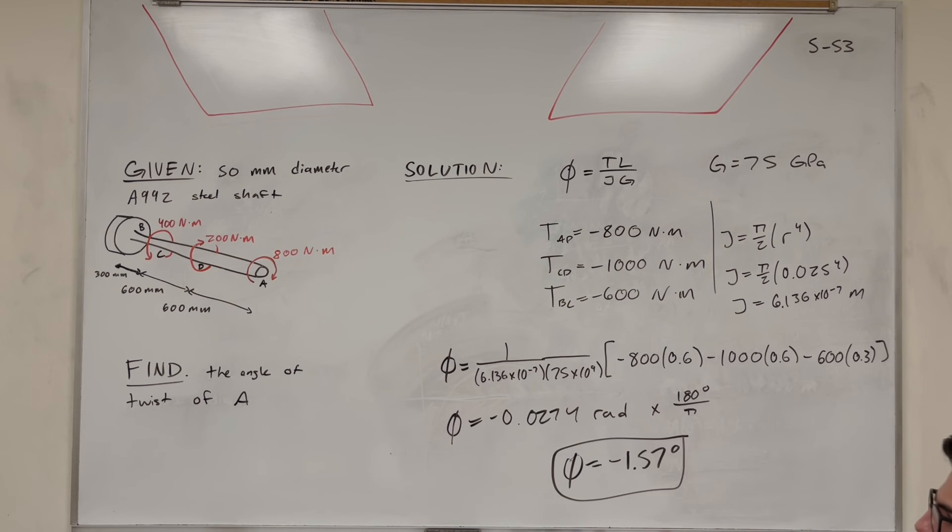And there we go. So that's our angle of curvature, our angle of twist of A. So that's how you solve this problem. Not too tricky. But make sure you do the torque calculations correctly. So if you have any trouble, check out my playlist. I've got a whole series on this. I'll see you in the next video. Thanks for your support. Peace.